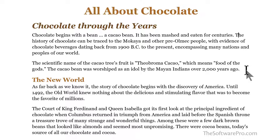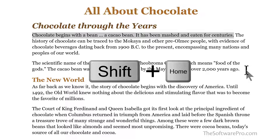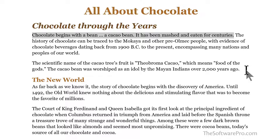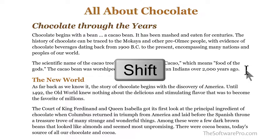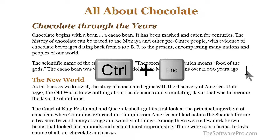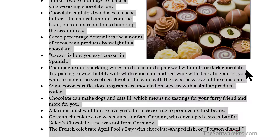Or if I'm somewhere in the middle of the text, Shift+Home takes me to the beginning. And if we want to highlight from this location to the very end of the document, we can do that too — once again using directional keys. So Shift+Ctrl+End takes us to the end of the document. Now whatever we want to do next, whether it's to cut, copy, or format, it's easy to do.